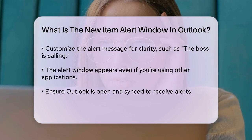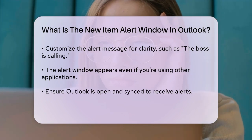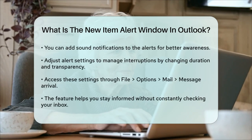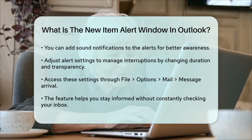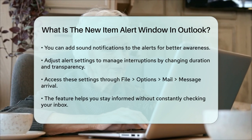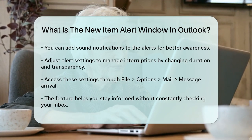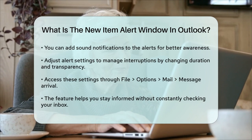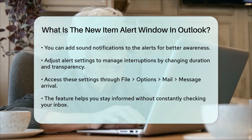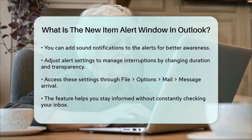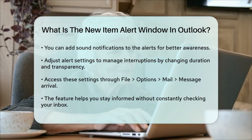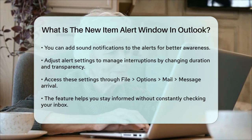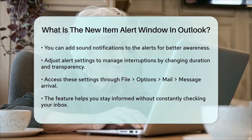The New Item Alert window is particularly useful if you need to stay informed about important emails without constantly checking your inbox. However, if you find that these alerts are interrupting your work, you might want to adjust the settings. For example, you can change the duration and transparency of the desktop alerts by going to File, Options, Mail, Message Arrival, and then adjusting the settings in the Desktop Alert Settings window.